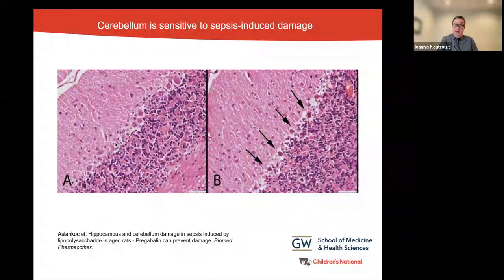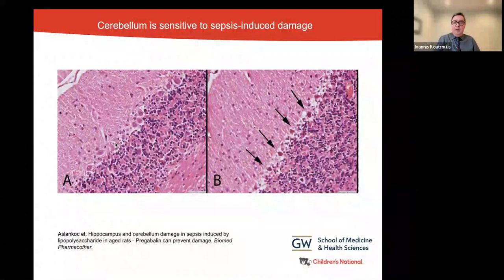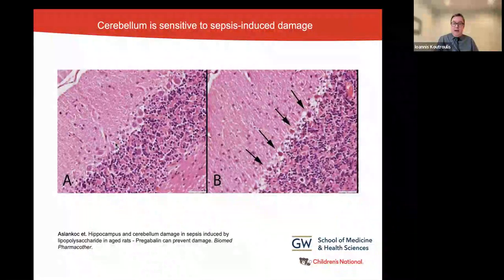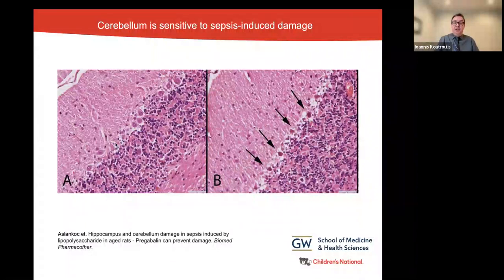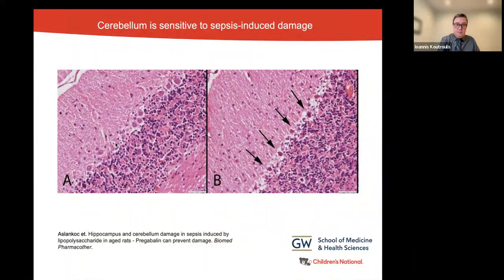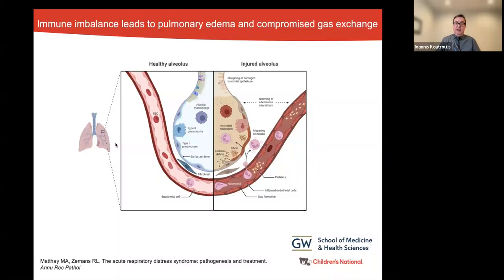I'm going to focus on two organs that are heavily affected in sepsis: the brain and the lungs. The brain is severely affected in sepsis, and the cerebellum is one of the most sensitive brain regions to inflammatory and hypoxic insults. As shown in graph two, there is significant degeneration of Purkinje neurons, the main efferent neurons of the cerebellum, compared to controls in graph A.